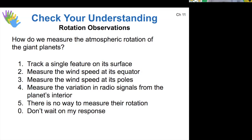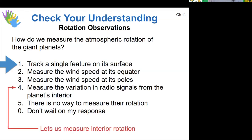How do we measure how fast the atmospheres rotate on these planets? The simple answer is you track a feature on the surface. Looking at Jupiter, for example, you could watch the Great Red Spot and see how long it takes to go around the entire planet, and thus know how fast that part of the atmosphere rotates. We do also measure the variation in radio signals from the planet's interior, but that helps us measure the rotation of the interior, not the rotation of the surface.